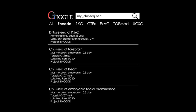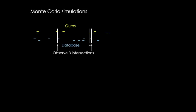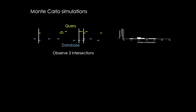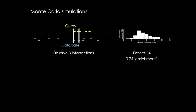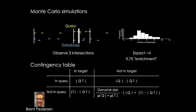But speed is only one part of the problem. The reason Google beat Yahoo is because Google searches gave more relevant results. So we need some way of ordering results by significance. The way this is currently done is using Monte Carlo simulations, where we first count the number of observed intersections between a query and a database, then start shuffling. For each shuffle, we recount intersections and use these counts to build an empirical distribution that describes the relationships between a query and a database.